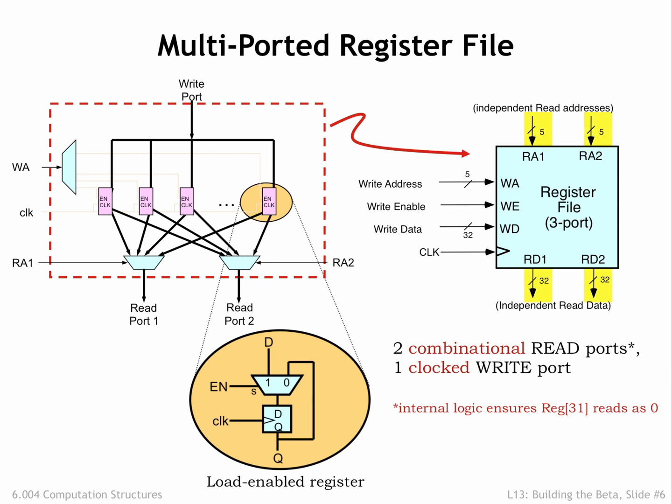The register file has two read ports which, given a 5-bit address input, deliver the selected register value on the read data ports. The two read ports operate independently — they can read from different registers or, if the addresses are the same, read from the same register. The signals on the left of the register file include a 5-bit value WA that selects a register to be written with the specified 32-bit write data. If the write-enable signal is 1 at the rising edge of the clock signal, the selected register will be loaded with the supplied write data. Note that in the beta ISA, reading from register address 31 should always produce a zero value, and the register file has internal logic to ensure that happens.